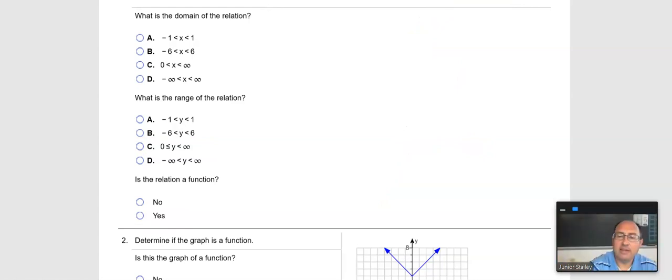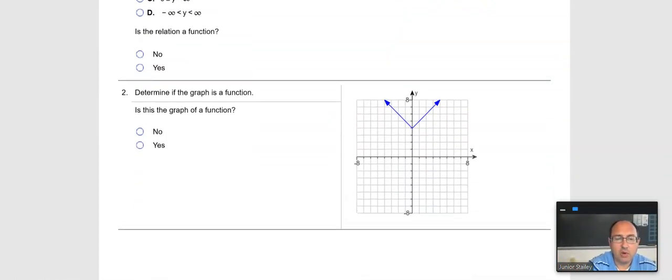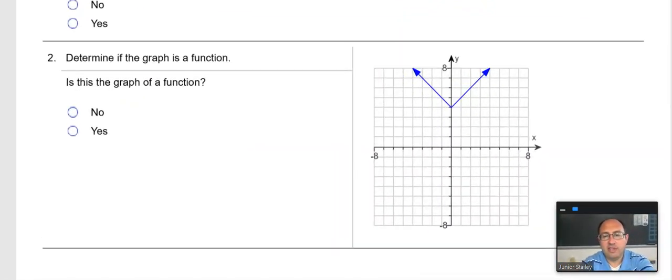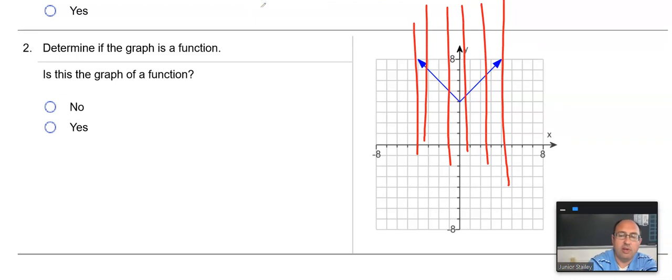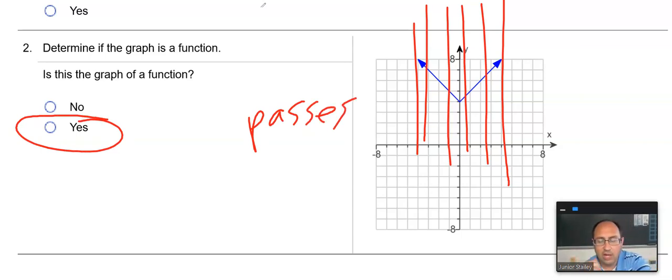I already had that disco shot. Okay, question two. Is this graph a function, right? We got an absolute value function. We're going to do the same thing we did before, pass the vertical line through it. That's a definite yes, right? Because it passes. You do not have a single vertical line that is hitting the graph more than once.